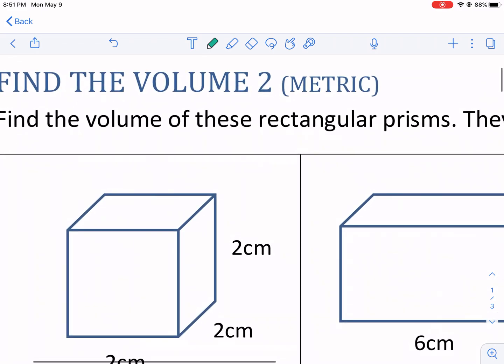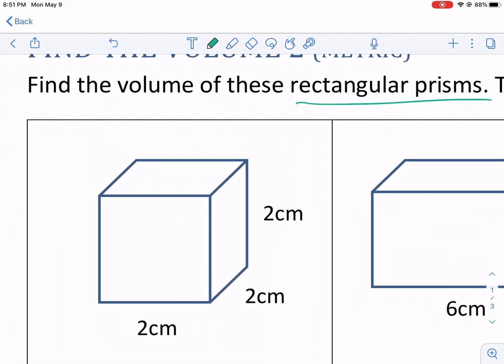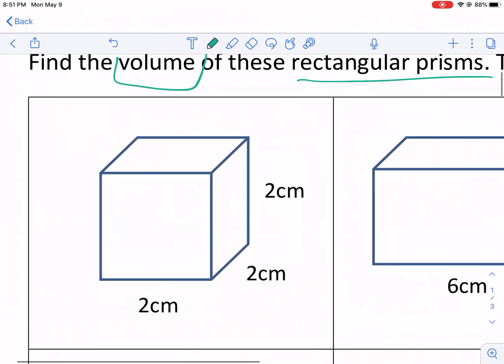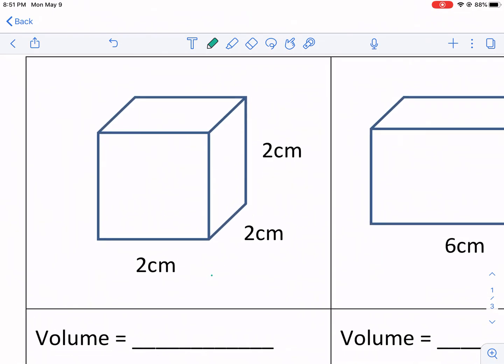Anyway, we're asking to find the volume of rectangular prism. What is a rectangular prism and what is volume? These are the things that we need to understand. In order to understand volume, we have to understand the difference between 2D and 3D shapes.